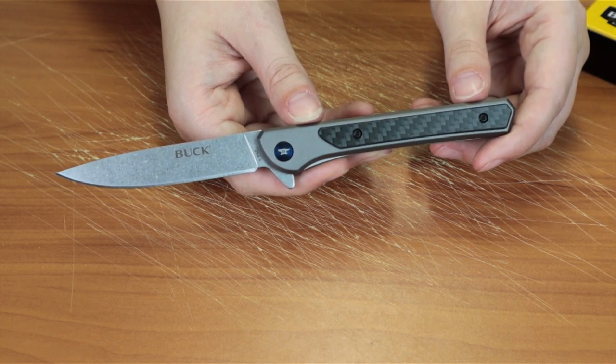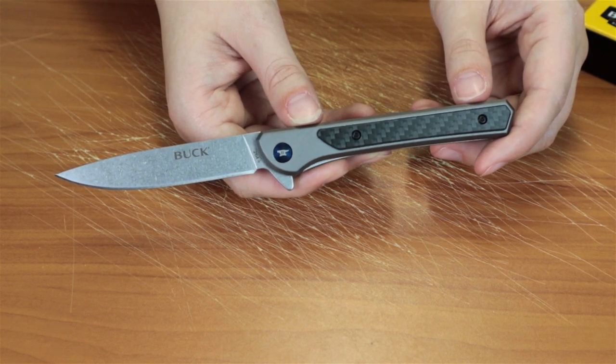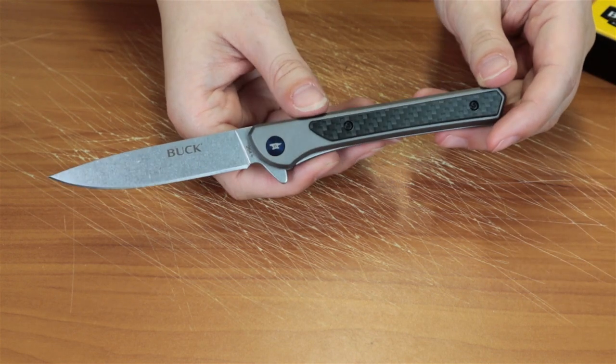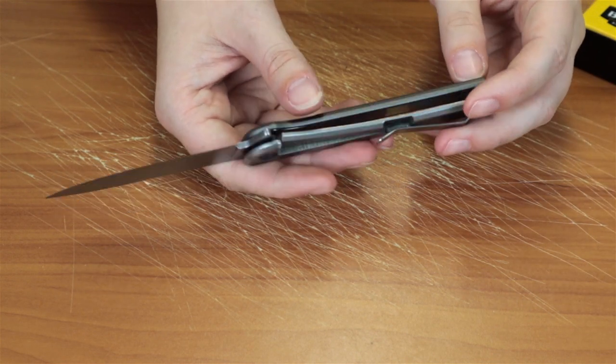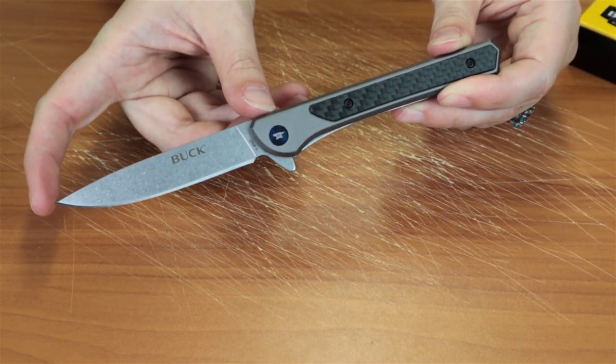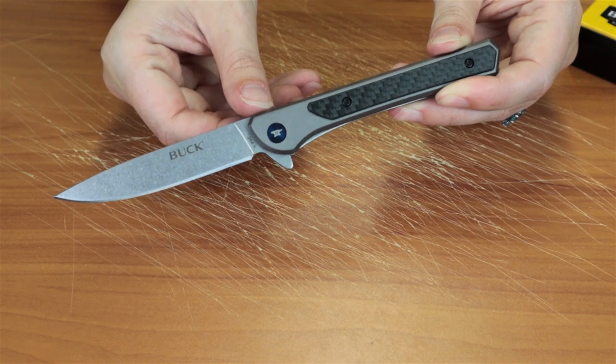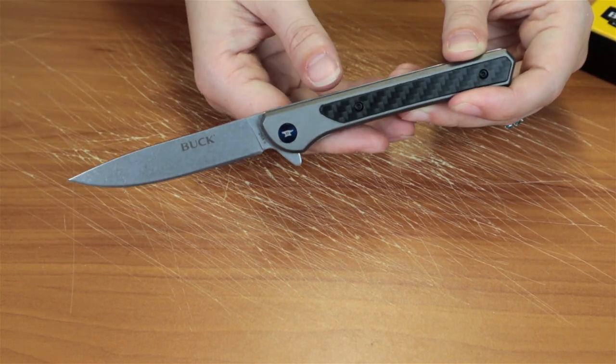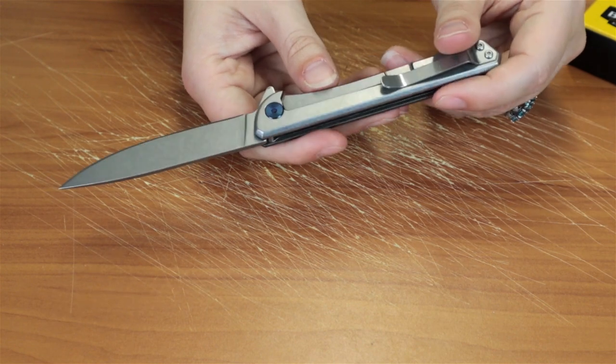Overall it is 8.1 inches overall. So pretty big knife from Buck in terms of a folder. Blade is 3.6 inches made of 7Cr17 stainless steel. It's got a drop point style. Stone wash finish so hide any scratches.